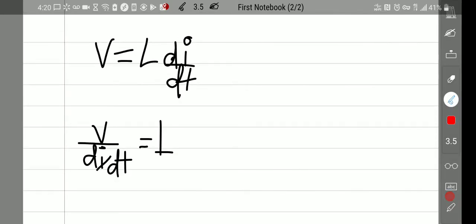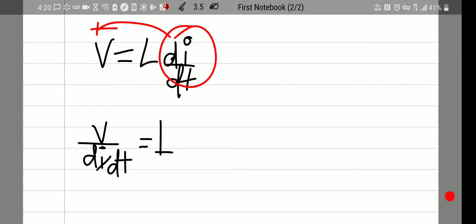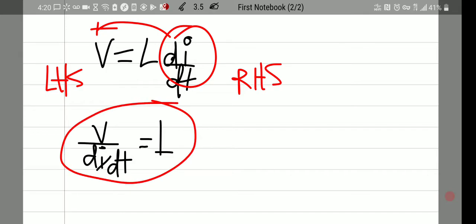So we do a little algebra. We divide both sides by di dt. That's how we get L on the left-hand side. Left-hand side. Right-hand side. And there's our equation for inductance.